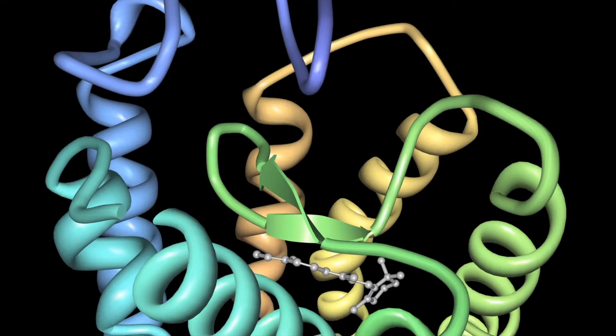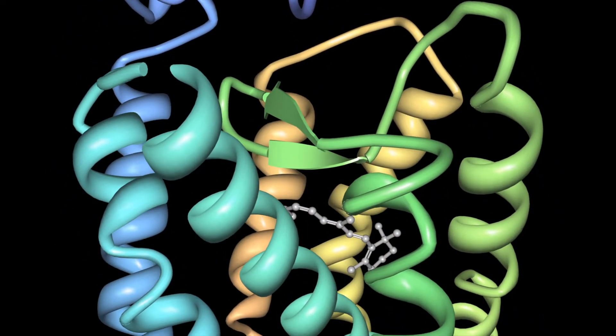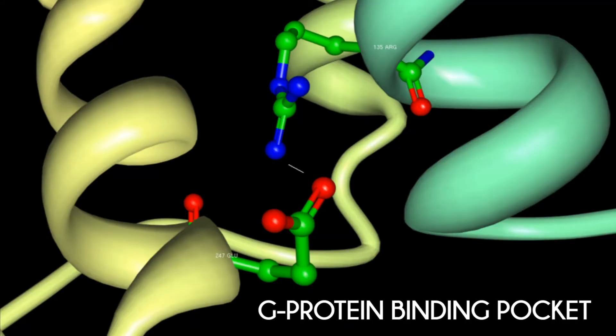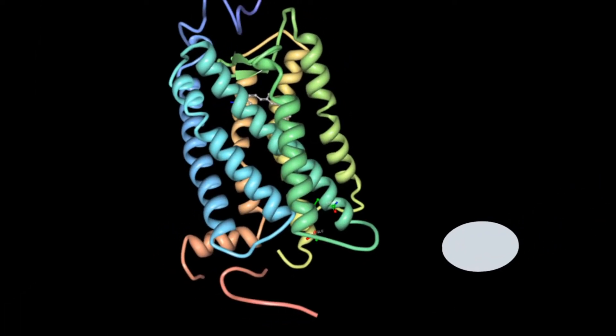The beta sheets serve as a lid, blocking retinal from dissociating from its binding pocket when rhodopsin is inactive. Another important feature is the salt bridge between arginine-135 and glutamate-247, which prevents G protein from binding to inactive rhodopsin.